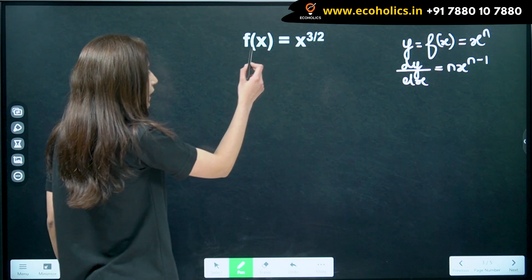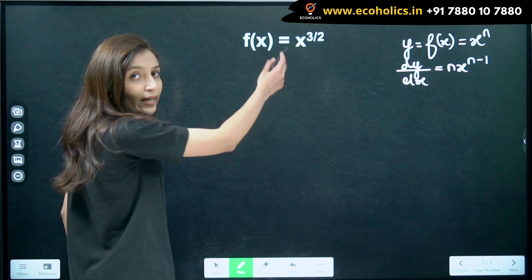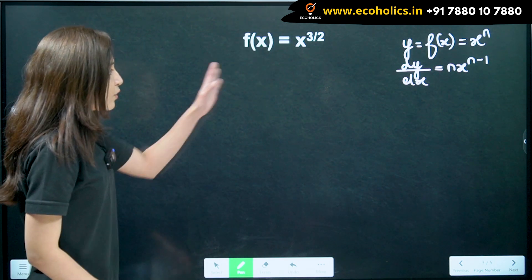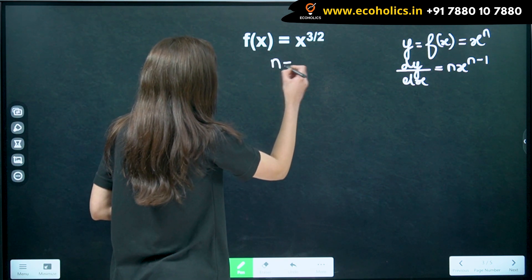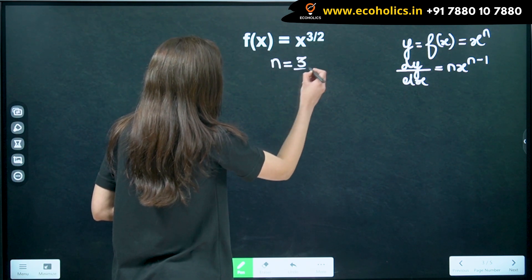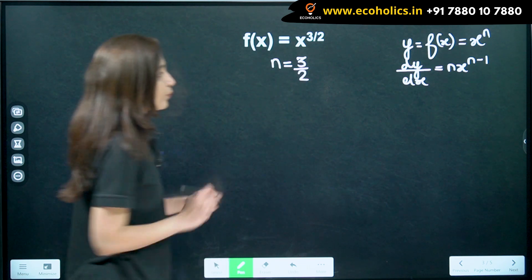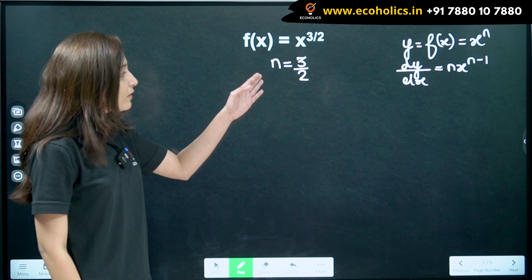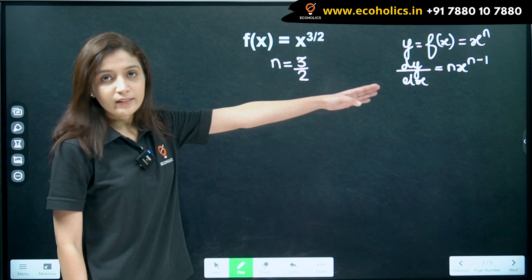Now, when f of x is equal to x raised to 3 by 2, what we see is, our n in this case is equal to 3 by 2. Now, substituting n is equal to 3 by 2 in that formula,